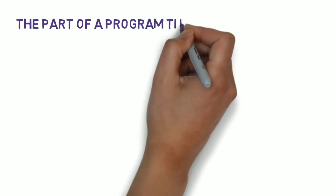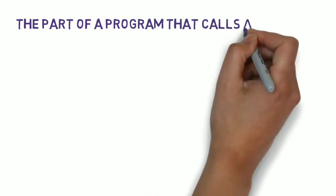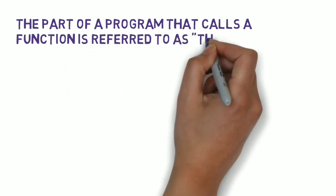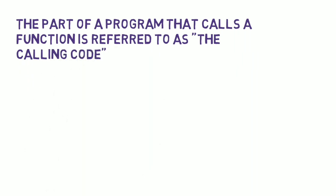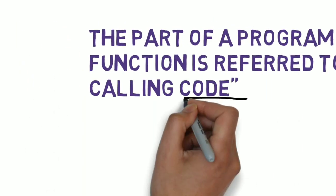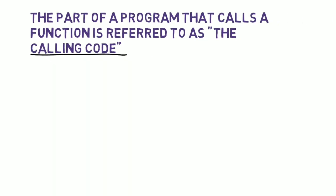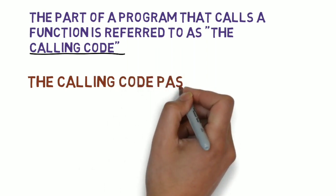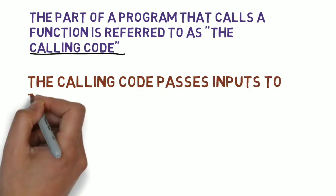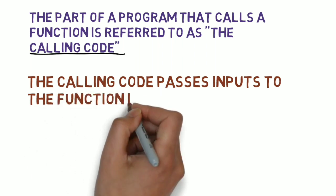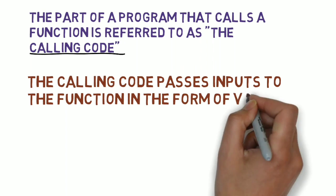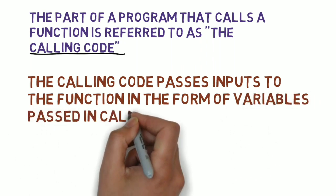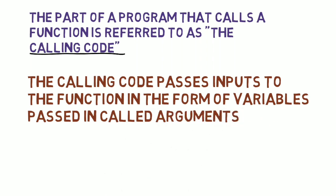The part of a program that calls a function, passes it some input and waits for the output from that function is called the calling code. The calling code usually passes in inputs to the function in the form of variables, and these variables are called arguments for that function. So the inputs to a function are called arguments.